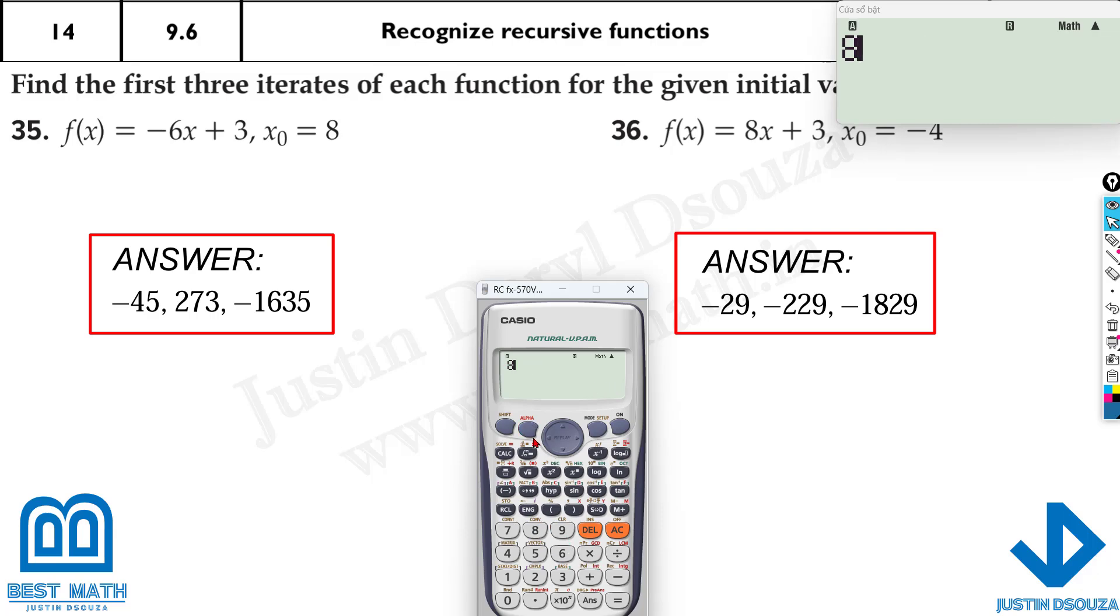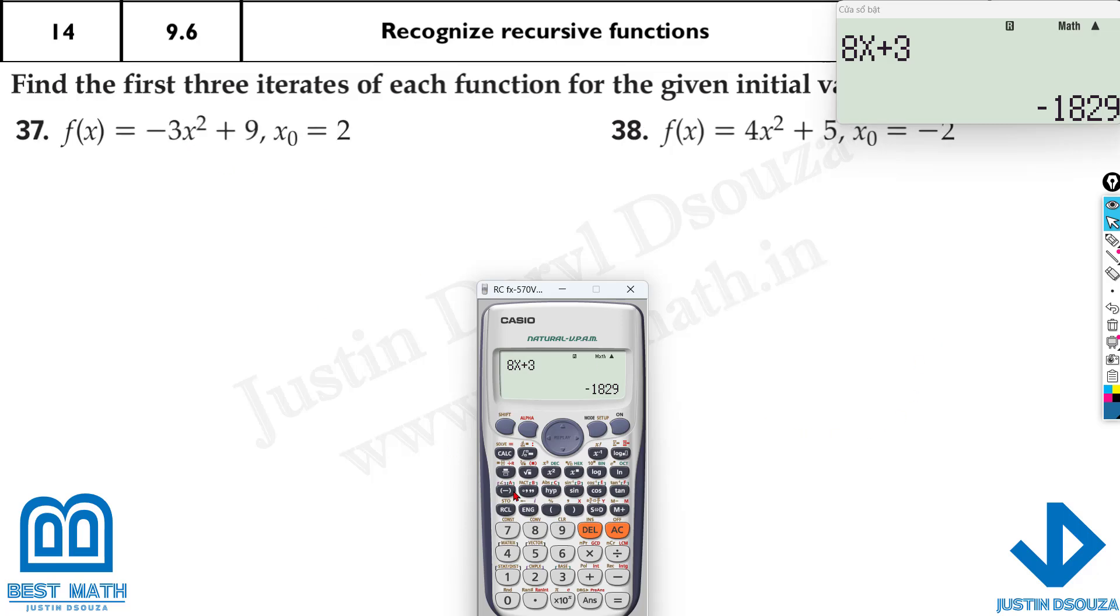So here, 8x plus 3, calculate it at minus 4. And here we go, it's minus 29, now calculate this at minus 29, and we have minus 229, and lastly at minus 229. That's minus 1829.